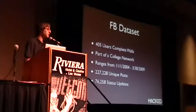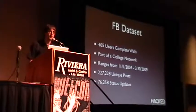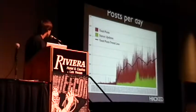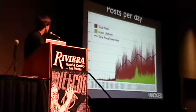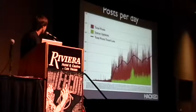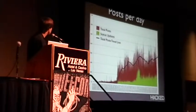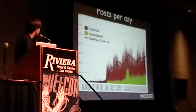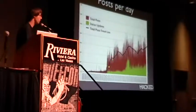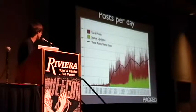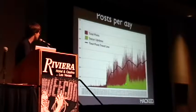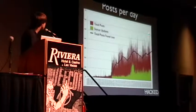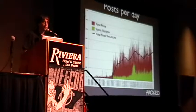There are 227,000 unique posts in that dataset, and about 76,000 of those posts were status updates. Here's a really cool graph — November 2004 on the left, March 2009 on the right, showing number of posts per day. The red is total posts, the green is status updates overlaid over that. You can see the giant ramp up in August of 2006 where a ton of people joined the network. Facebook introduced the ability to post statuses, which didn't really catch on, and then they introduced the ability to comment on statuses — all of a sudden people went crazy with that.